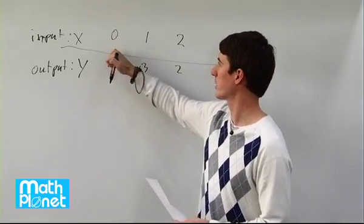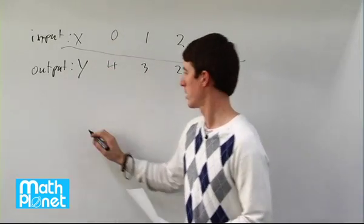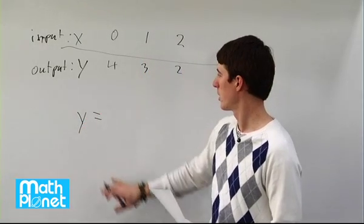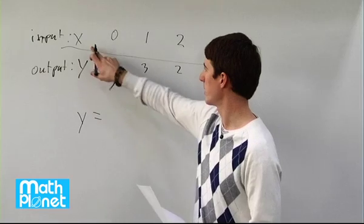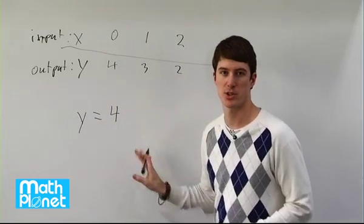So the important thing to see is that the input variable when it's 0, our output variable is 4. So if we want to write it as a y equals formula, we know that when the input variable is 0, we have a value of 4. So there's going to be a 4 that's not attached to any input variable.